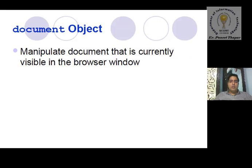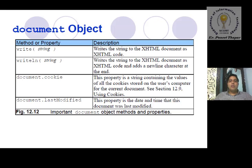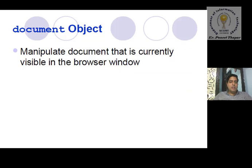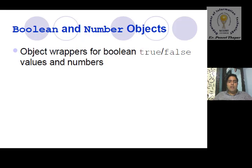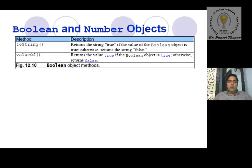This is all about simple terminologies and objects for Boolean, Number, and Document objects. In the next lecture/video tutorial we will use these objects in the window object and explain everything with examples. As you study, follow the PPT, use Notepad, and build your practical file alongside. If you have any doubt or query, you can WhatsApp me. Thank you, have a nice day.